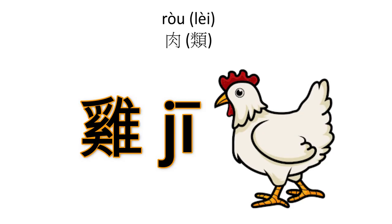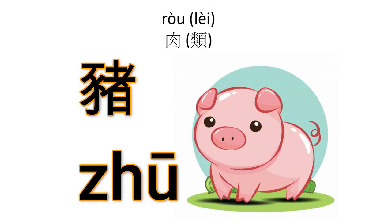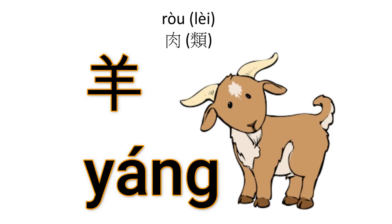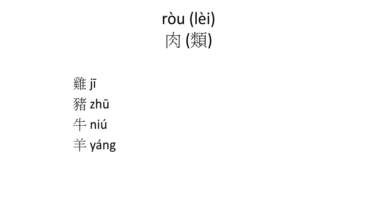So the first one: 鸡 means chicken, 豬 means pig, 牛 means cow, and 羊 means goat. So 鸡肉 is chicken meat, 豬肉 is pork, 牛肉 is beef, and 羊肉 is lamb.